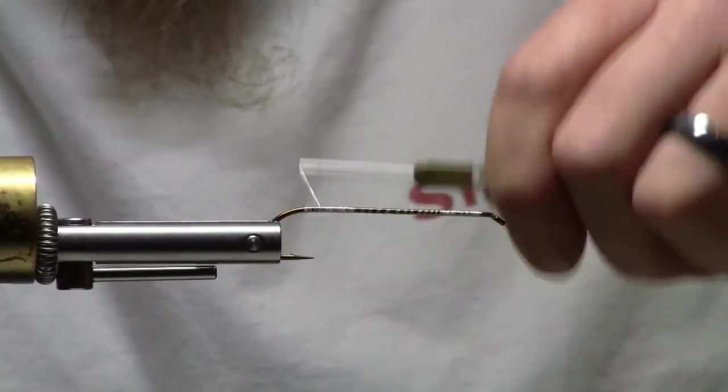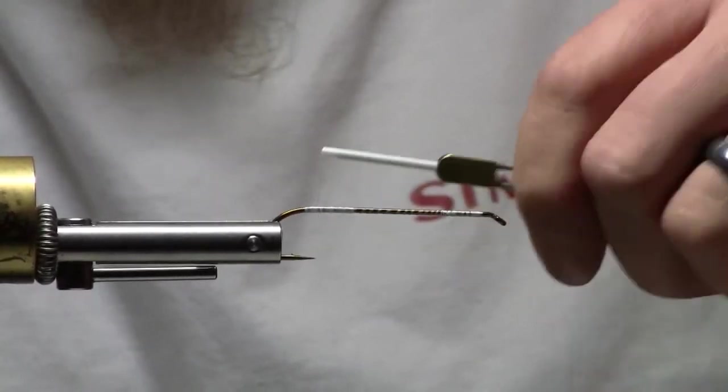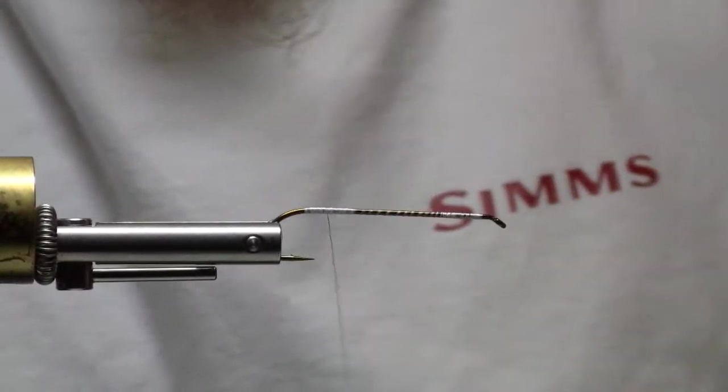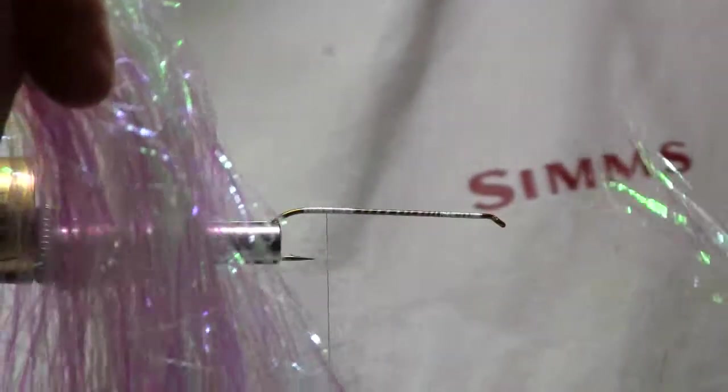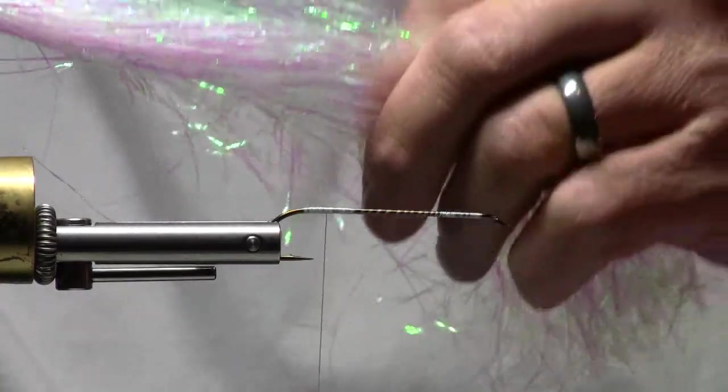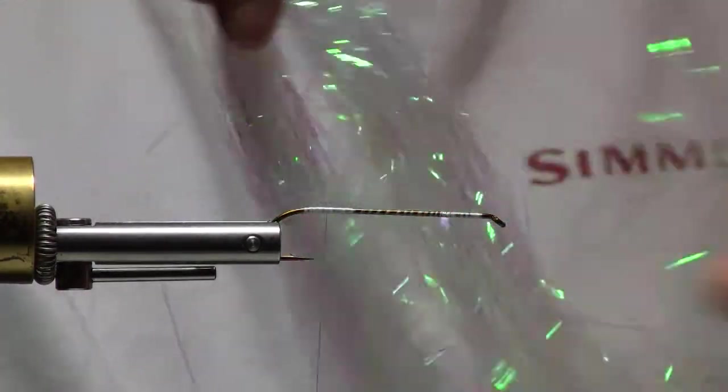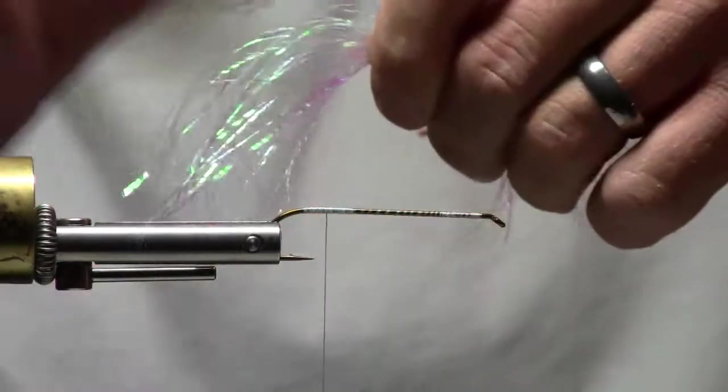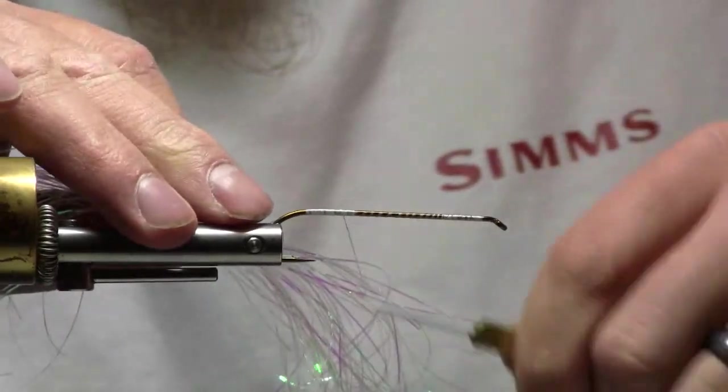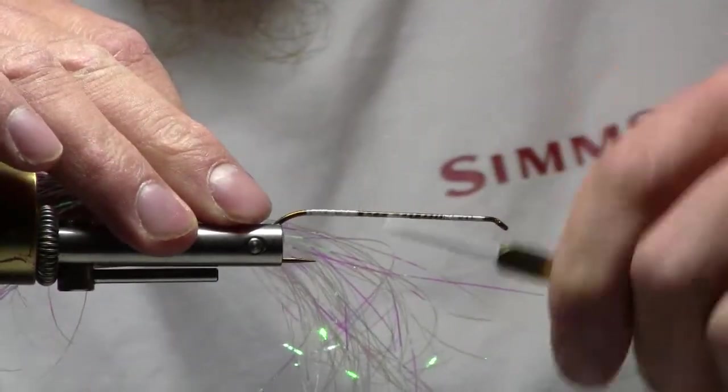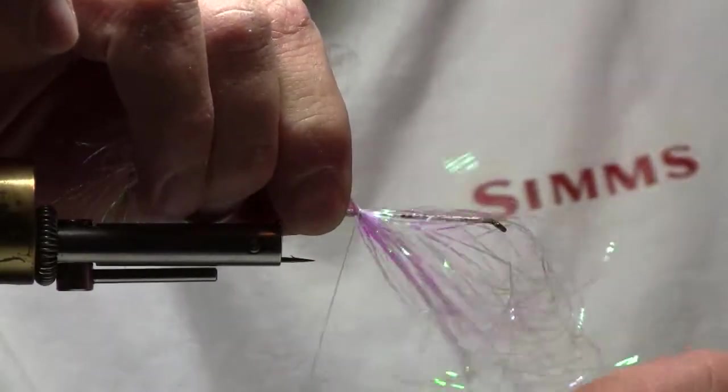For the tail of the fly, I'm using Pearl Web from FlyTiresDungeon.com. Check it out. Great material for the price. This is what it looks like. Very cool, cheap flash. Looks wonderful in the water. I've cut this about twice the length of the hook, doubling it over. Cut it a little bit longer than that, I've noticed. So I'm going to tie this in. Tie it in quite well.